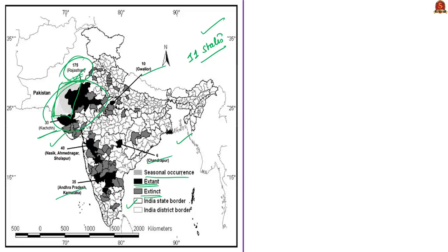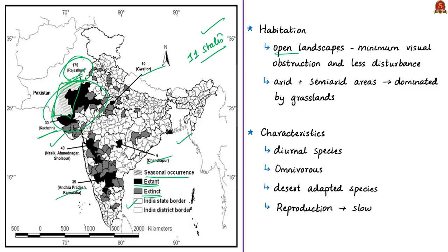Great Indian Bustards generally favor flat open landscapes with minimal visual obstruction and less disturbance. Habitat studies found that they typically use arid and semi-arid areas dominated by grasslands of 30 to 70 centimeter height, which provide minimal visual obstruction. Their habitat requirements may vary with season and behavior. They are known to nest in open barren land during summer and tend to avoid grasses above one meter height, as well as dense scrub like Prosopis juliflora.